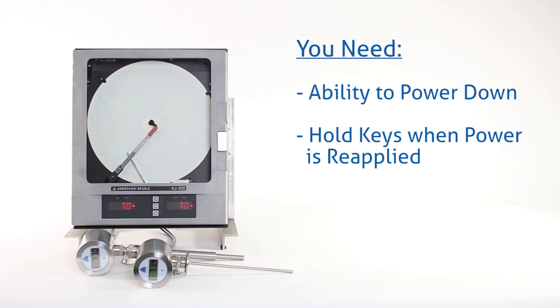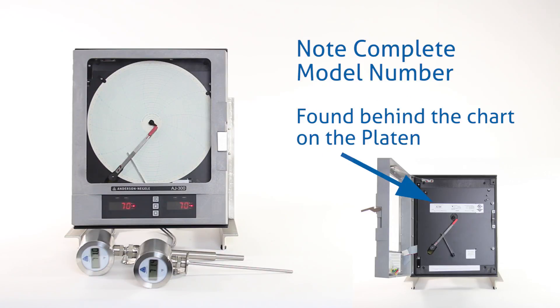In order to do this, you'll need the ability to power down the recorder and then hold certain keys while you reapply the power. You're also going to want to take note of the complete model number which is listed on the sticker on the chart button directly behind the chart paper.